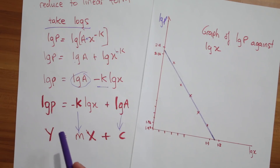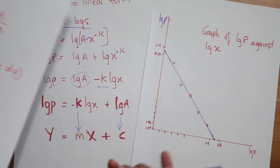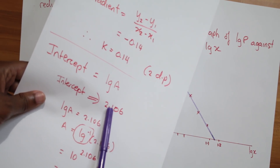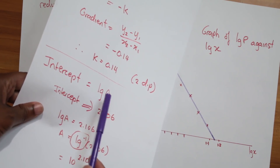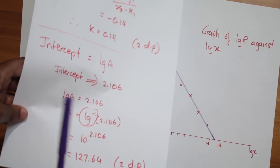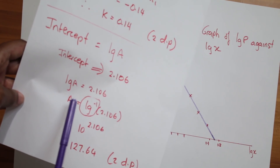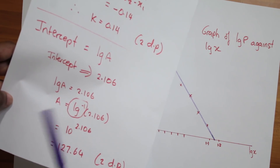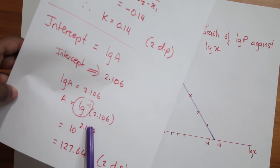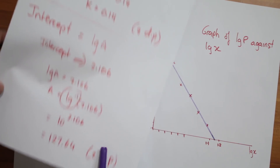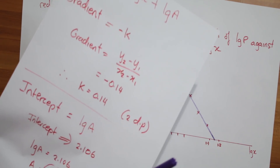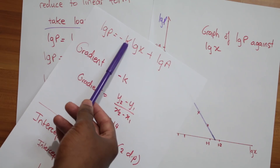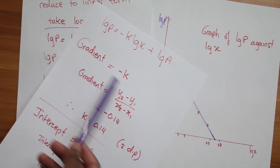Most likely they want you to find the values of a and k. Remember y equals mx plus c — c is the y-intercept, so follow the graph to where it hits that axis. The intercept was about 2.106, and the intercept represents log of a. So a equals the anti-log: press second function on your calculator where you see 'log' and put 10 to the power of 2.106. For k: negative k is in the place of the gradient, so the gradient equals negative k.